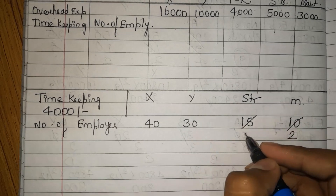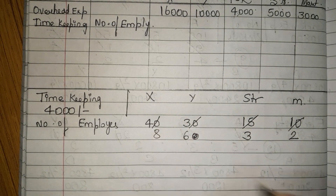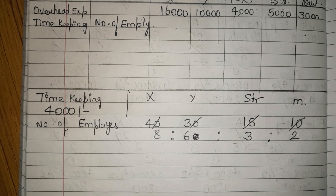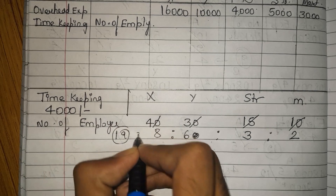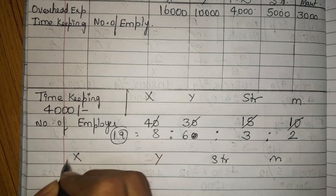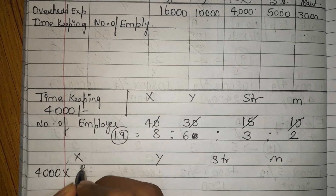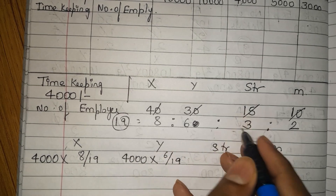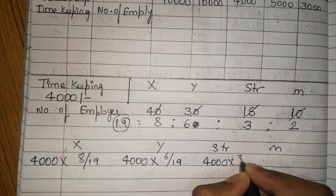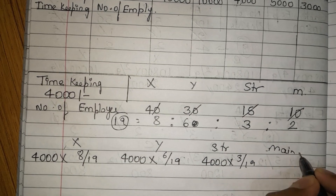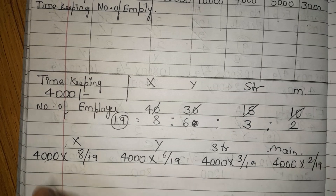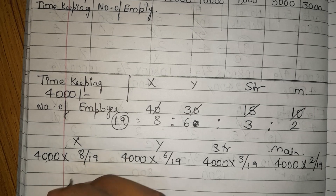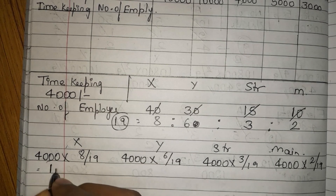We can divide all values by 5, giving a ratio of 8:6:3:2. Adding these: 8+6+3+2 = 19. So for X it is 4,000 × 8/19, for Y it is 4,000 × 6/19, for stores it is 4,000 × 3/19, and for maintenance it is 4,000 × 2/19. Calculating: X = 1,684, Y = 1,263, stores = 632, maintenance = 421.